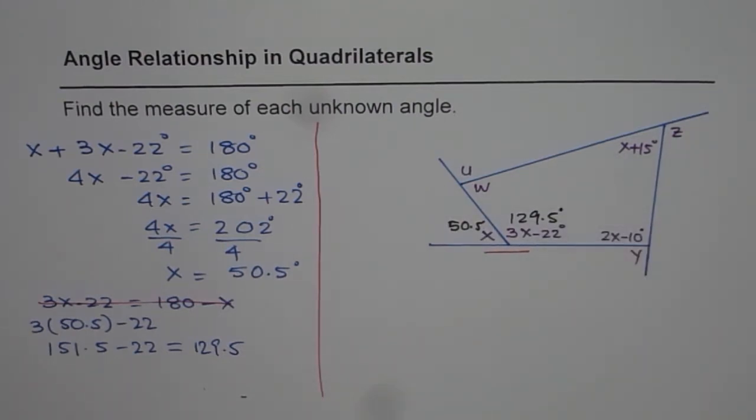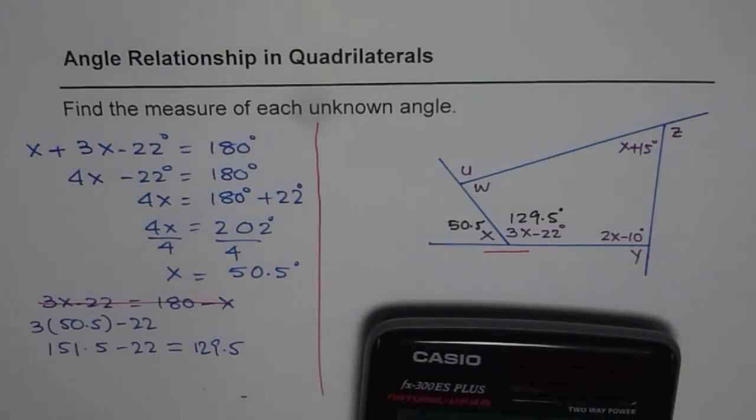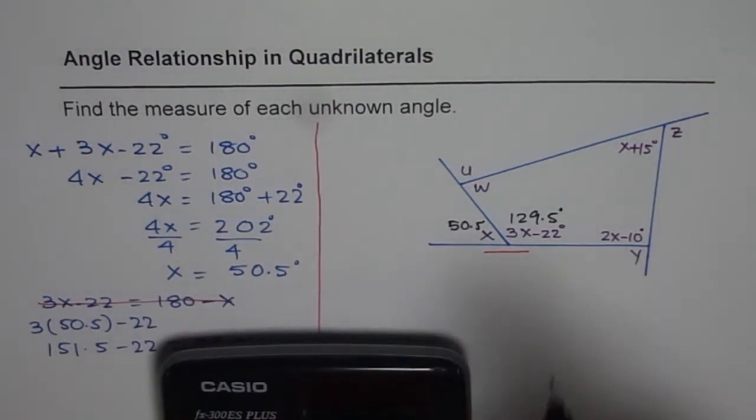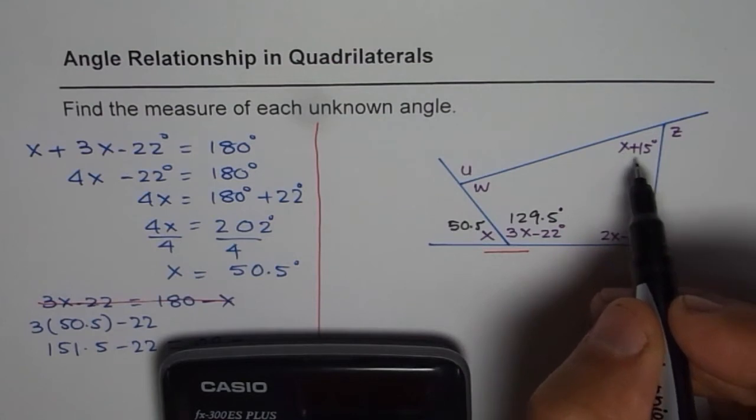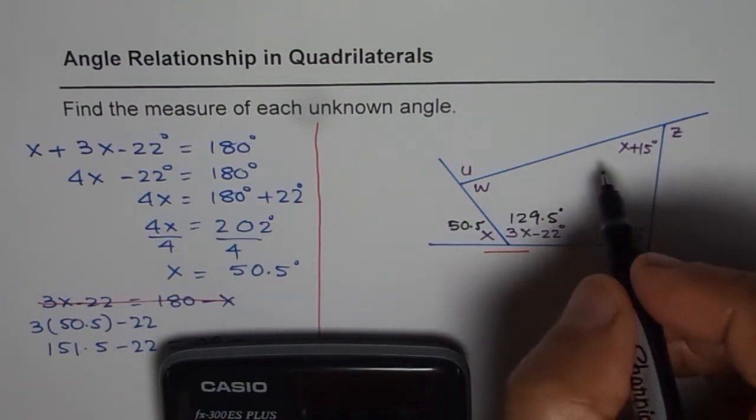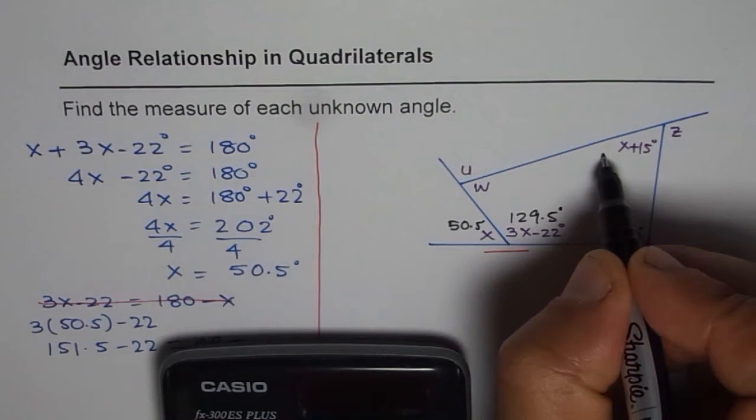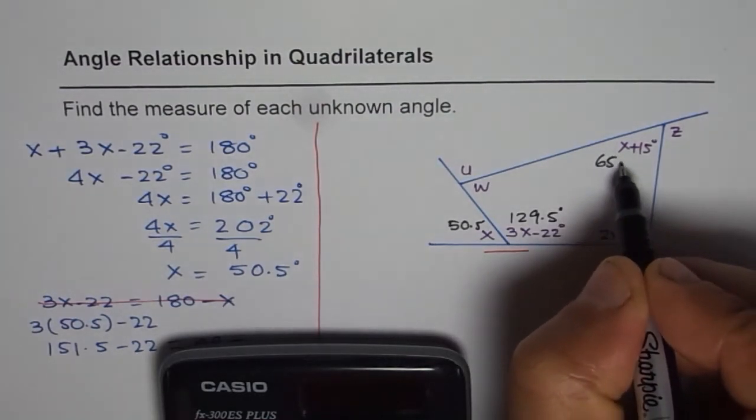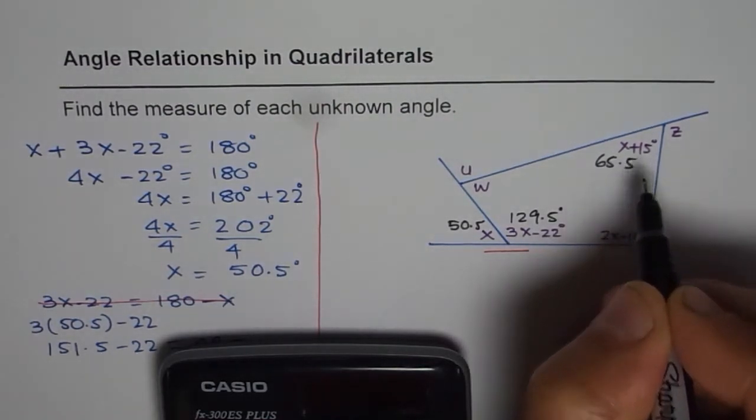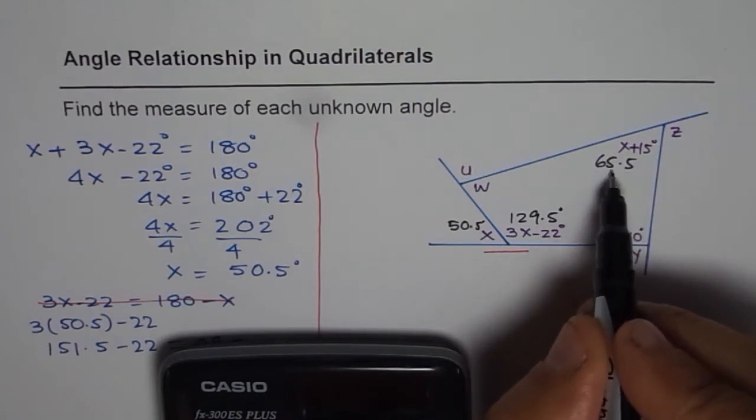So for example, this angle will be 50.5 plus 15. So that gives us 50.5 plus 15 will give you 65.5. Now once you find this angle as 65.5,